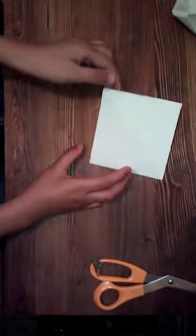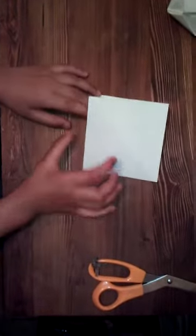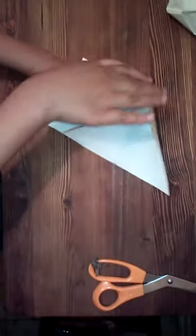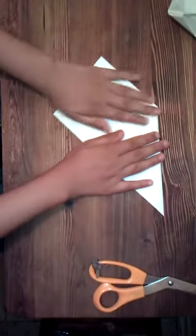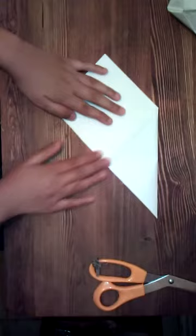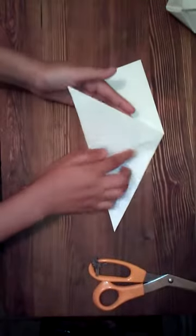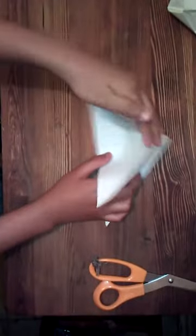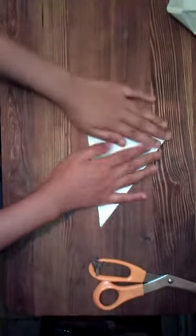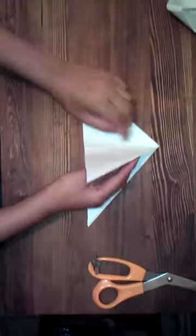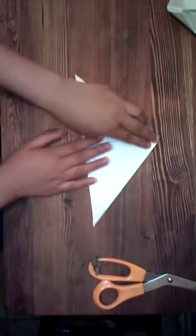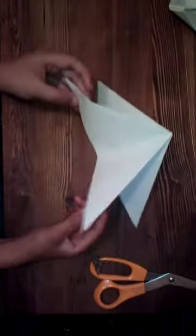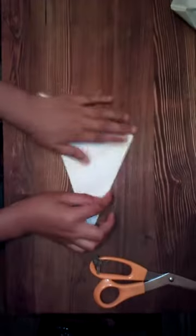And now we're going to fold into the water bomb base and then you just kind of squash fold this down like that and then fold this flap to the right. You want to do the same thing with this side, just squash fold it down and then you just want to fold it to the left. And you have folded the water bomb base or the balloon base.